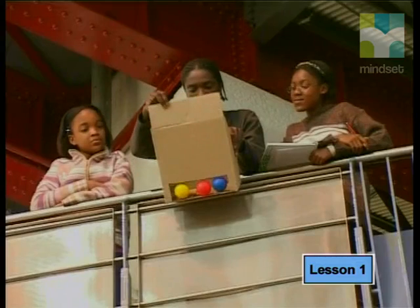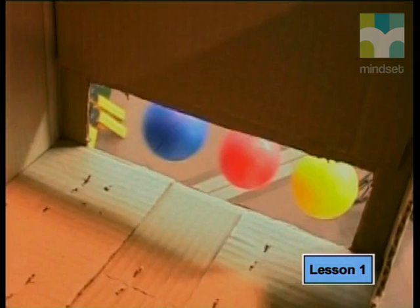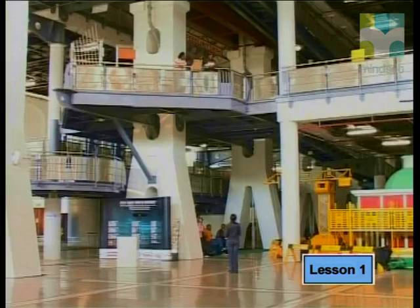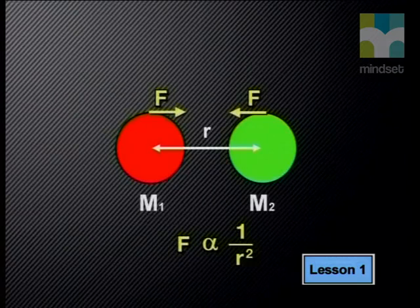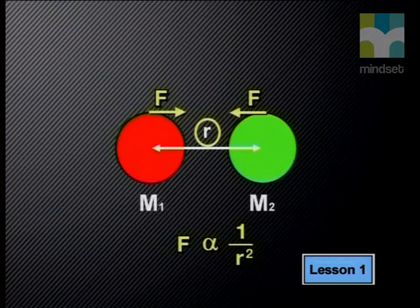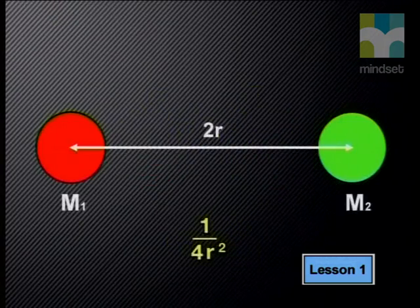We can illustrate this with a simple example: a ball is attracted by the Earth's gravitational field. Because it has so much less mass than the Earth, it will fall towards the Earth if you let it go. The law also states that the gravitational force of attraction is inversely proportional to the square of the distance between the particles. As the distance between the particles increases, the force of gravity decreases. If the distance is doubled, the force decreases to one quarter of its original magnitude — this is an inverse square relationship.